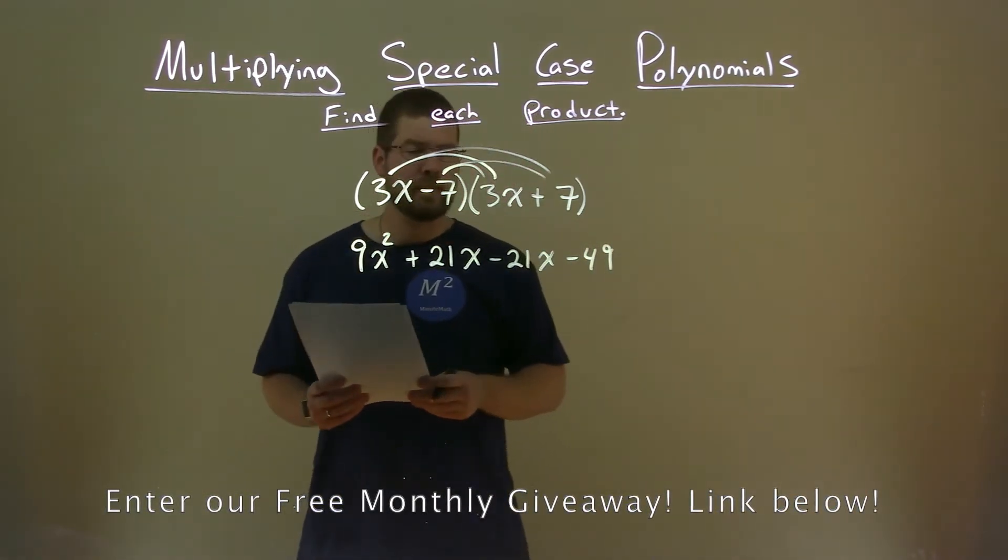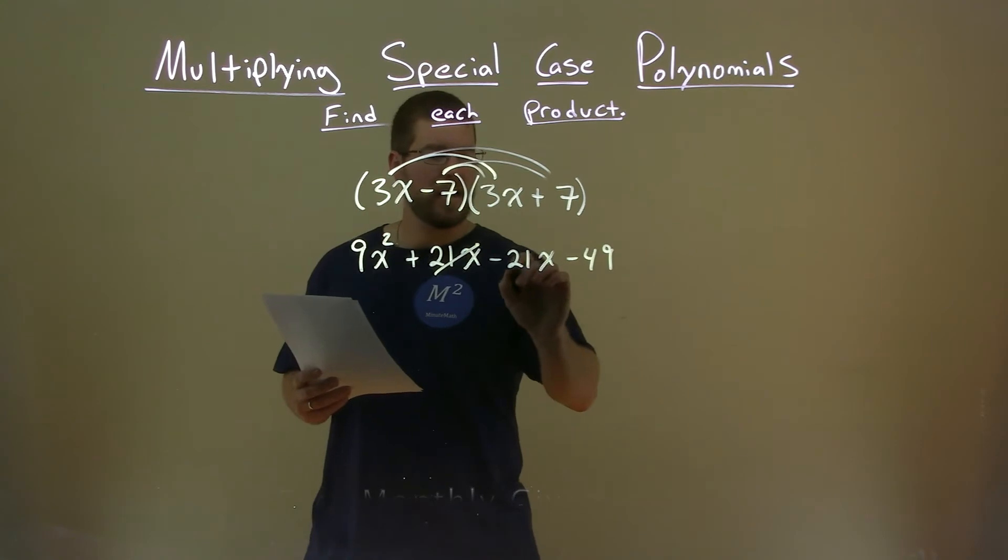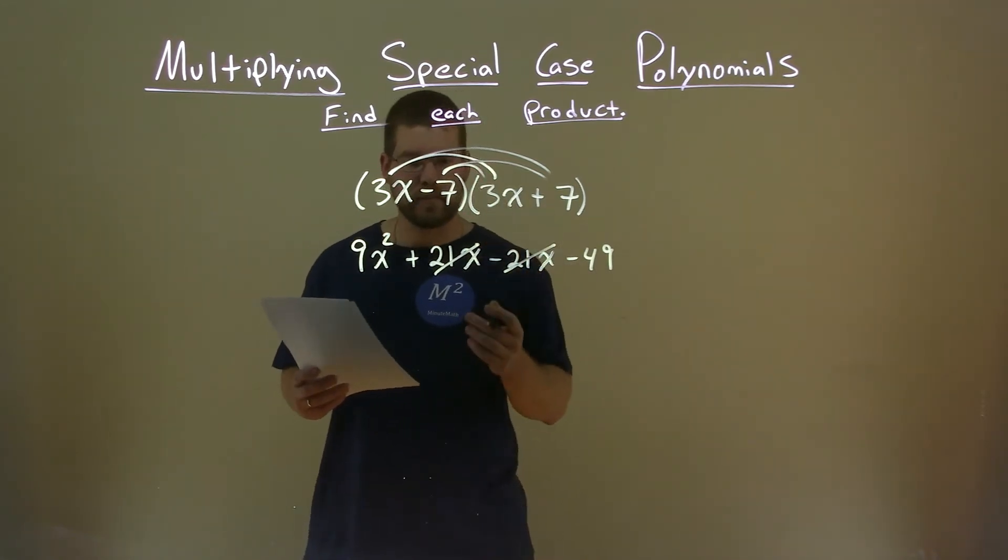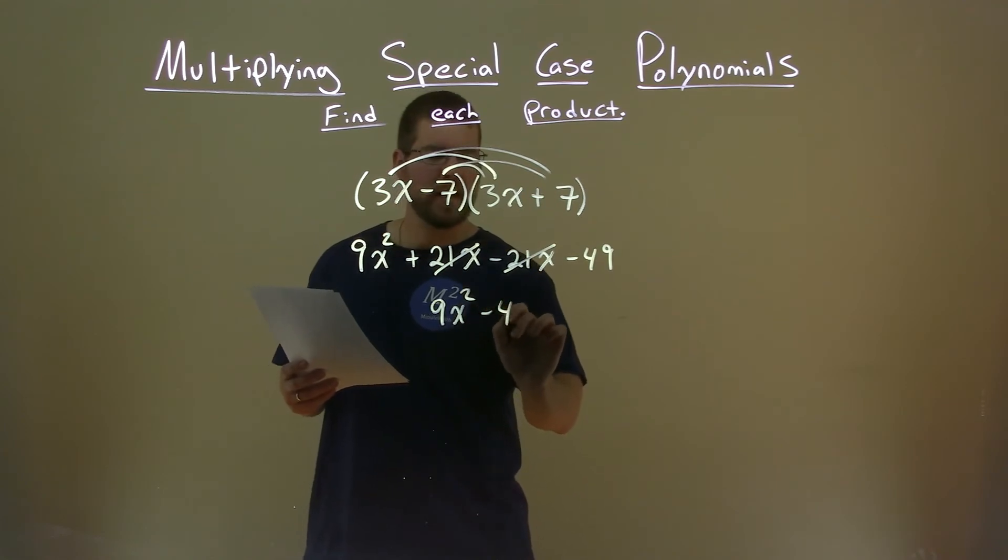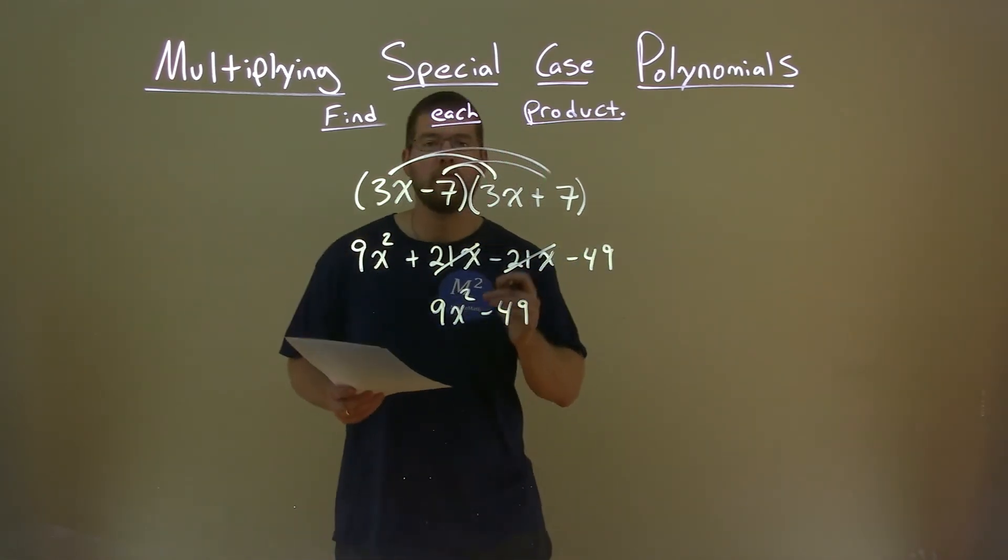So now we need to simplify. Luckily here, 21x and minus 21x will cancel. So we're left with 9x squared minus 49, and that is our final answer.